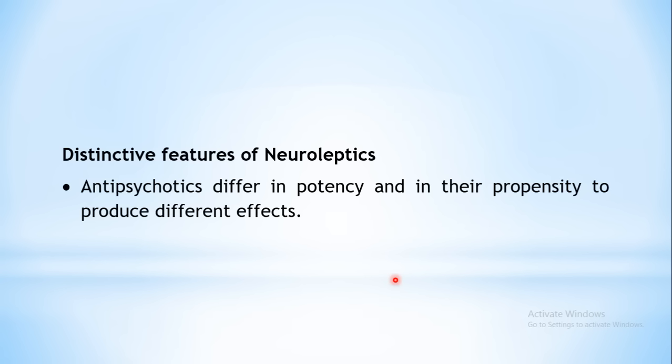Yesterday we had started with antipsychotic drugs. We saw the definition, classification, and started with chlorpromazine. As a prototype drug we covered the actions, pharmacokinetics, tolerance and all. So before moving to interactions, adverse effects and uses, we will see the distinctive features of the other neuroleptics. We have seen chlorpromazine in detail.